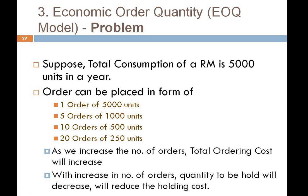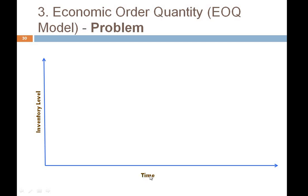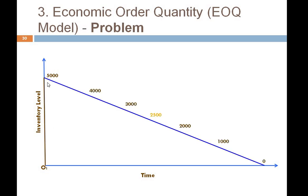Before understanding this relationship fully, we need to understand average inventory. Consider a diagram with inventory level on one axis and time on the other. If 5000 units are ordered at once, inventory starts at 5000 and decreases over time to 4000, 3000, 2500, 2000, 1000, and finally 0. At no single point in time are we holding 5000 units continuously, so we need average inventory to calculate the accurate holding cost.